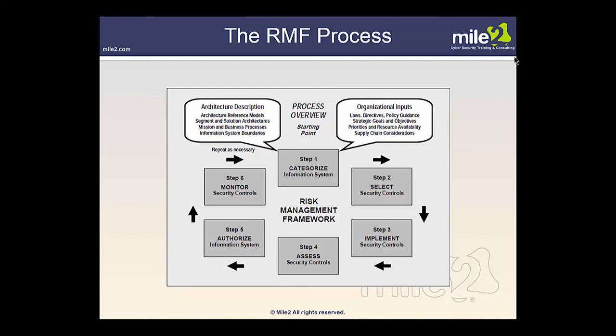As we go through this material, we will see these in much deeper detail — starting with Step 1: categorize the information system; Step 2: select security controls; Step 3: implement security controls; Step 4: assess security controls; Step 5: authorize the information system; and Step 6: monitor security controls. The chapters to come will go into each of these steps in detail.